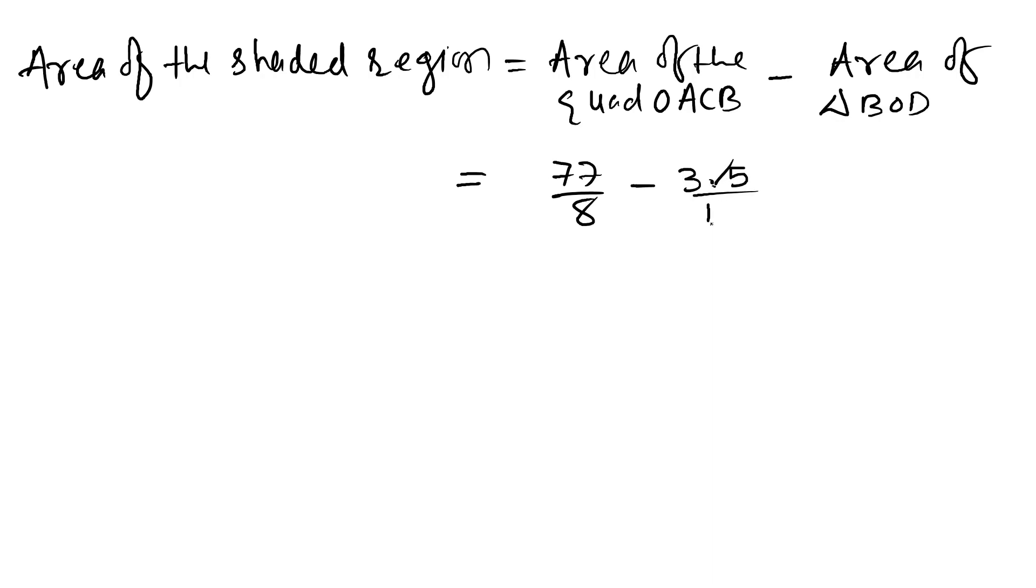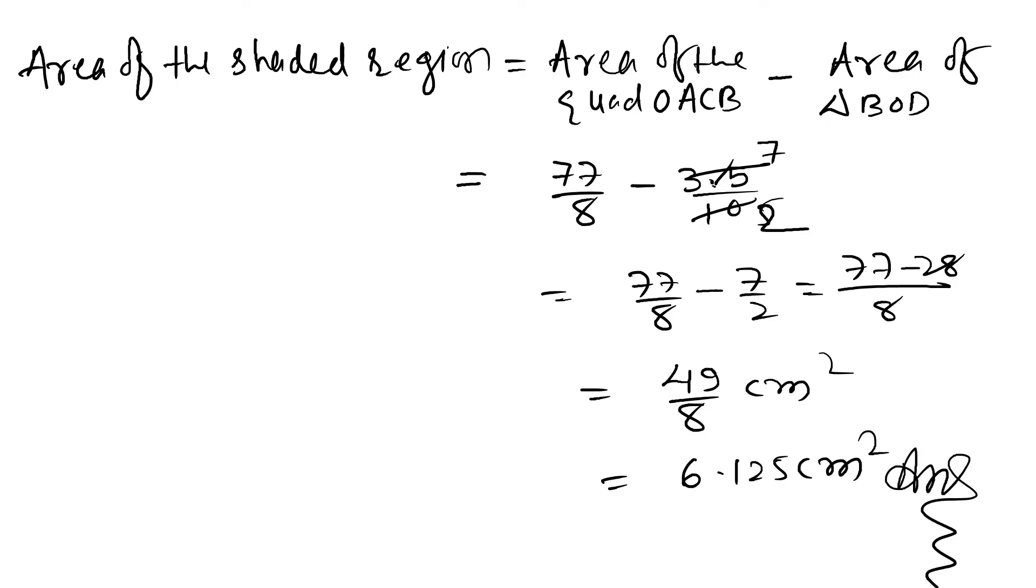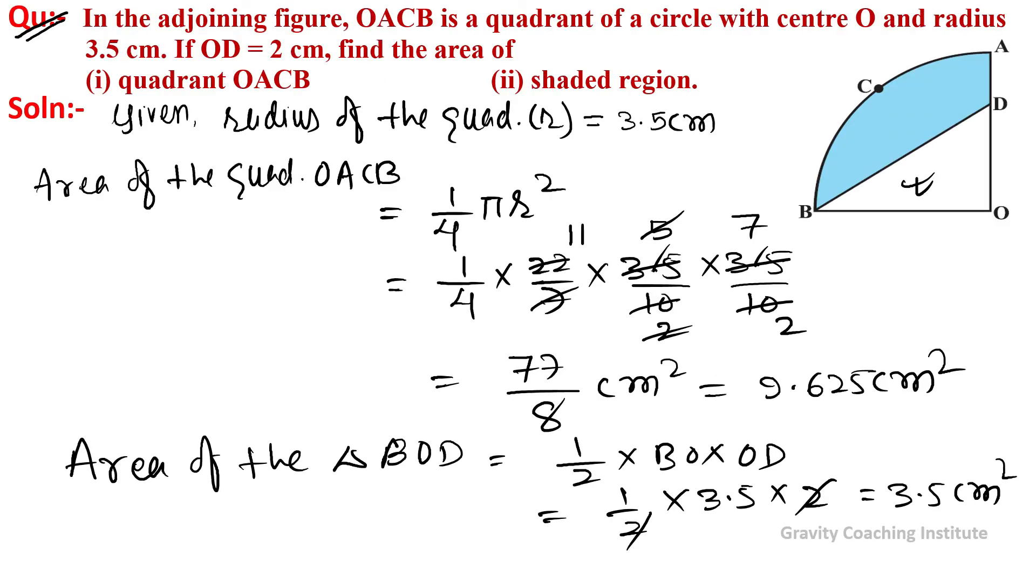Continuing the calculation: 77 upon 8 minus 7 upon 2. Taking LCM of 8, this becomes 77 minus 28 over 8, which equals 49 upon 8 centimeter square. Dividing, this gives 6.125 centimeter square as the final answer.